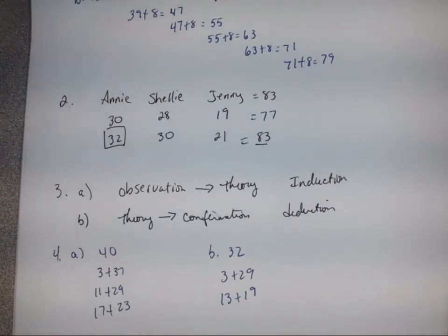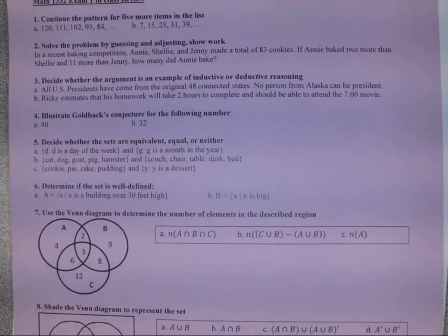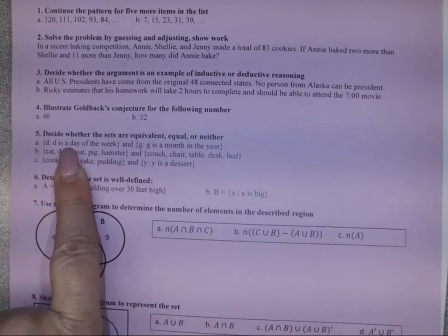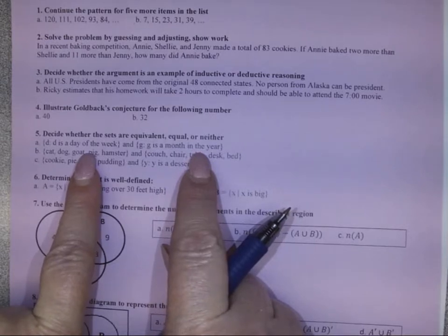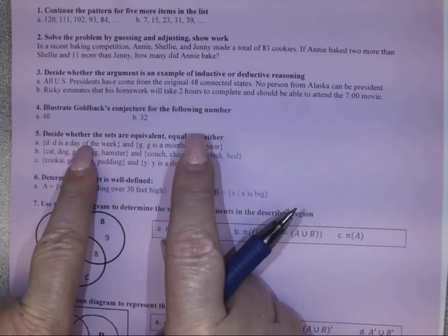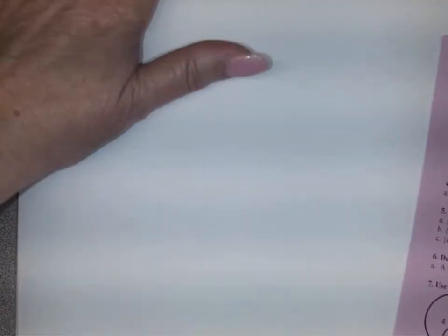Question 5 asks us to decide whether the sets are equivalent, equal, or neither. Equivalent means the same number of elements in each set. Equal means the same elements. For Part A: D is a day of the week (7 elements) and G is a month of the year (12 elements). They are not the same elements and not the same number of elements, so the answer is neither.